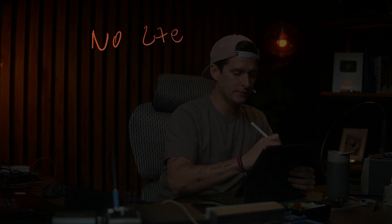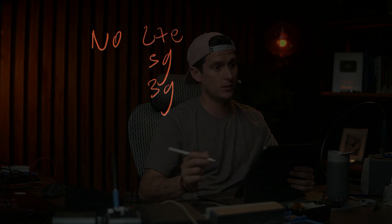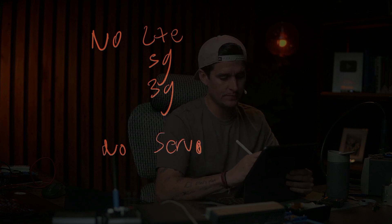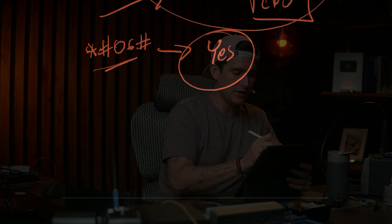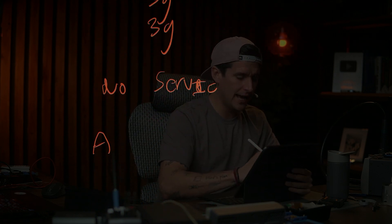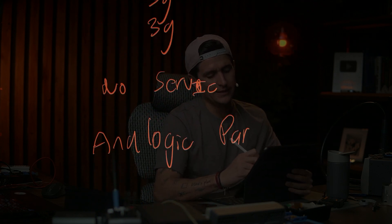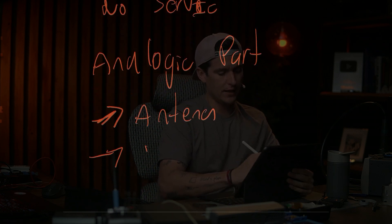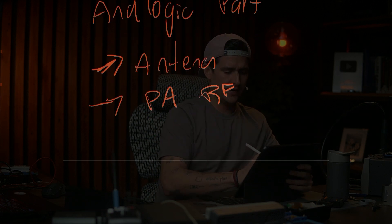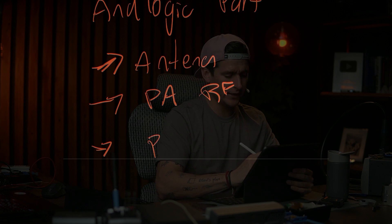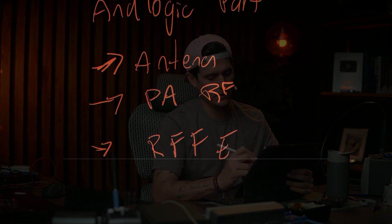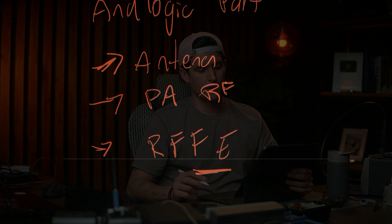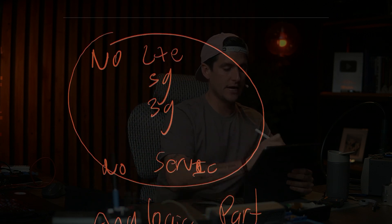But if we have a problem — for example no LTE, no 5G, no 3G, or no service at all — but we still have the serial number, then the problem can be in the analogic part. The analogic part is this section: we have the antenna, we have the PA (the amplifier for RF), and we can have other things — all the RFFE, the radio frequency front end.